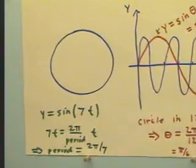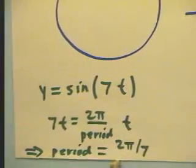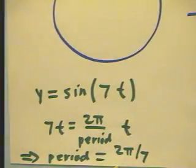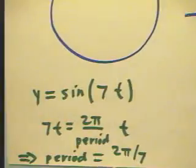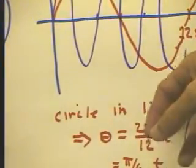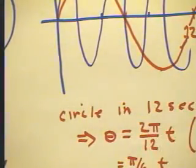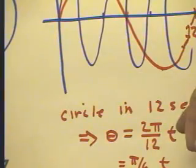Looking at things in a little different way, let's say that we wanted to think about the graph of y equals sine of 7t. Well, in that case, remember that what we did over here was we put 2π divided by the period, the 12 second period around the circle. And that's a number that goes in front of t.